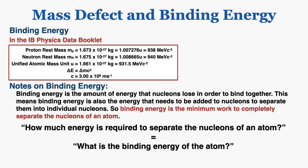This is all the information given about protons, neutrons, the atomic mass unit, and E equals mc squared in the IB physics data booklet. The proton and neutron rest masses are actually already given as energy values, and the unified atomic mass unit is also given in energy.